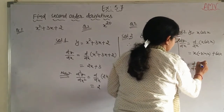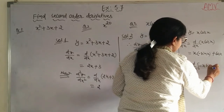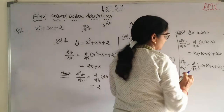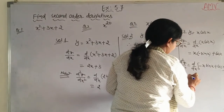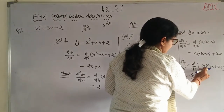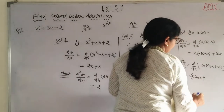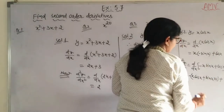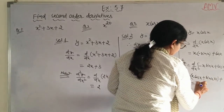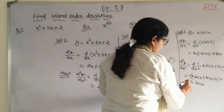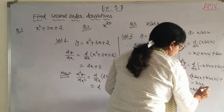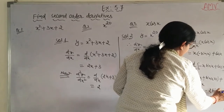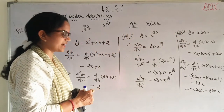Now differentiating again to get d²y/dx²: d/dx of (−x sin x + cos x). For the term −x sin x, apply the product rule: −x as it is times derivative of sin x (which is cos x), plus sin x times derivative of x (which is 1). Plus derivative of cos x, which is −sin x. So you get −x cos x − sin x − sin x, giving −x cos x − 2 sin x. This is the second order derivative.